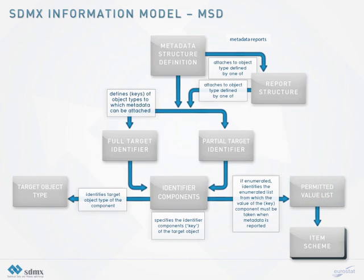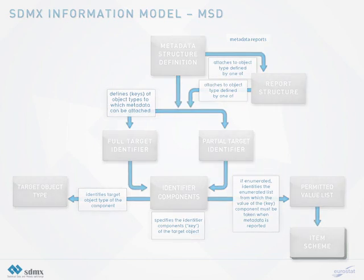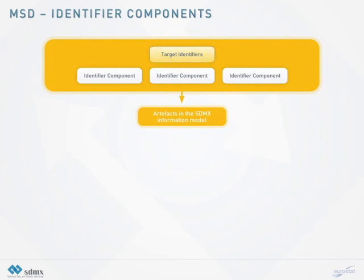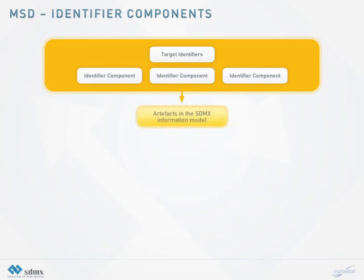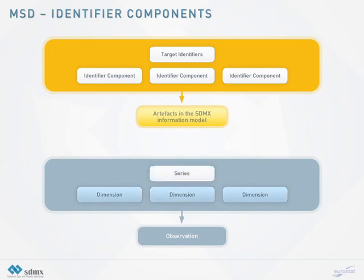An identifier component can have an association to an item scheme which enumerates the possible values for the component. An item scheme is a generic name in the information model whose specific types are codelist, concept scheme, organization scheme and category scheme. A target identifier in a metadata structure definition consists of one or more identifier components. These individual identifier components are combined in the target identifier to describe the object which the reference metadata describes.